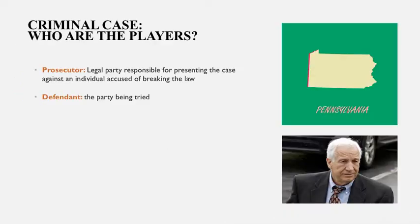In a criminal case it's a little bit different. The party bringing the case is not called a plaintiff — it's what we call a prosecutor, the legal party responsible for presenting the case against an individual accused of breaking the law. In a criminal case you typically won't see a plaintiff's name; instead you'll see the state. For example, in the Jerry Sandusky trial, he was the Penn State coach accused of molesting young boys, and the state of Pennsylvania brought the case on behalf of those individuals.